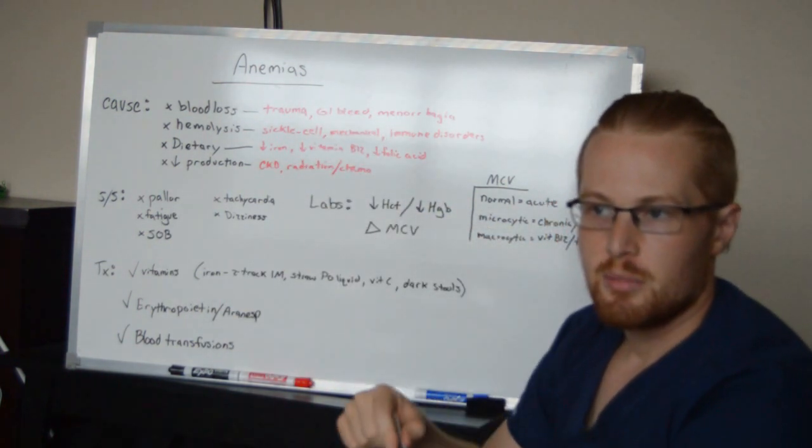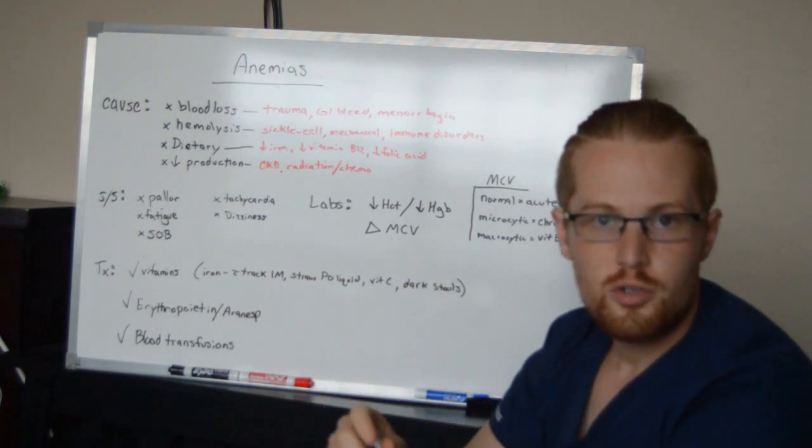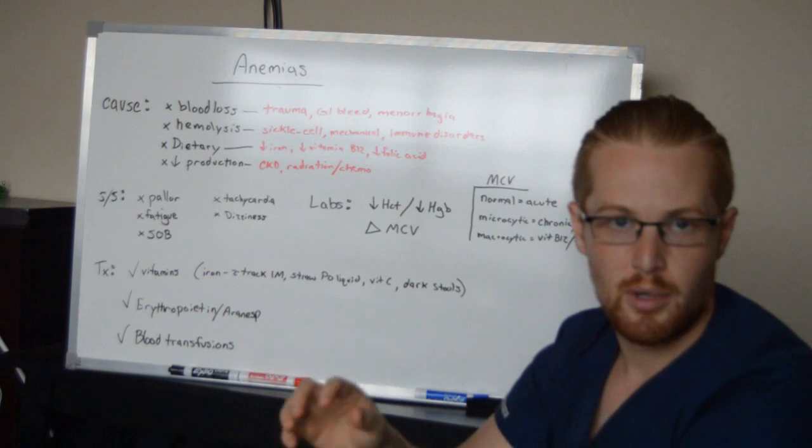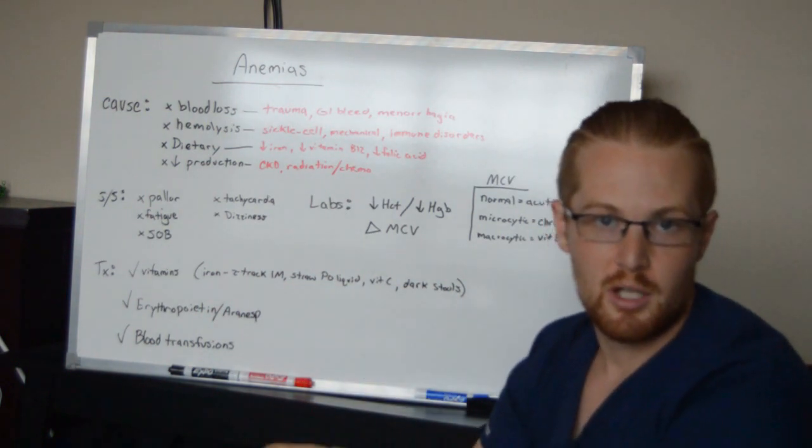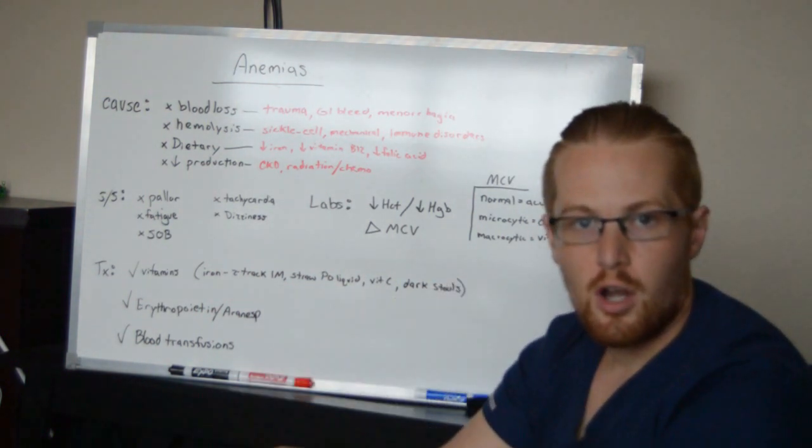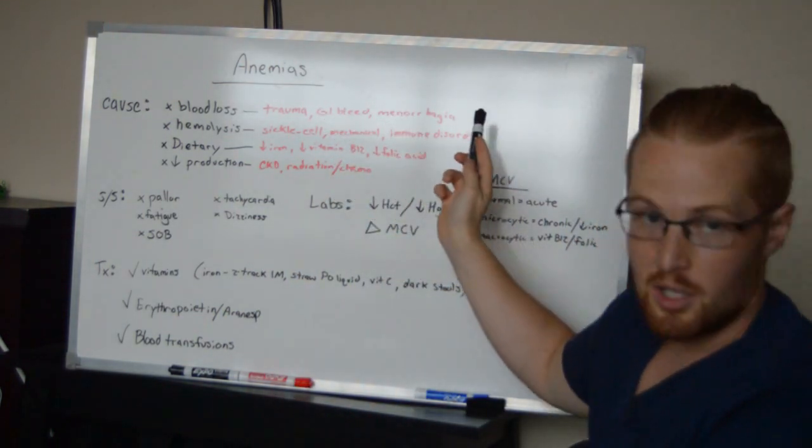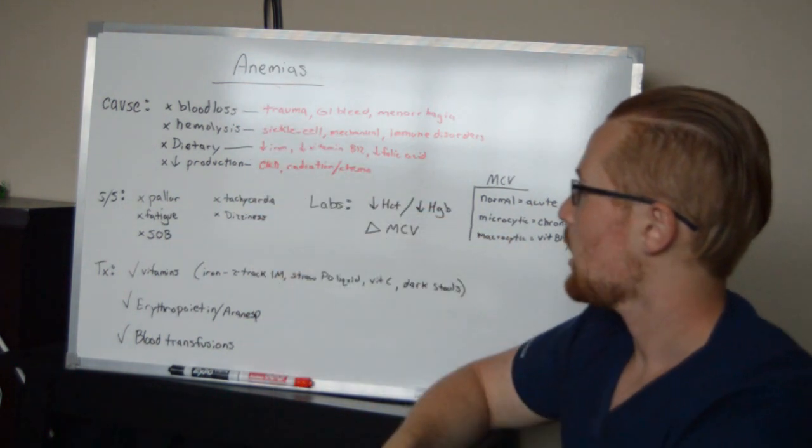It's important to note, GI bleeds can be very dark tarry stools. If that's the case, the bleed's further up and it's partially digested, that's why it's dark. Or it can be bright red blood, which would mean it's further on, closer to the rectum. Or heavy periods would be an example of blood loss.